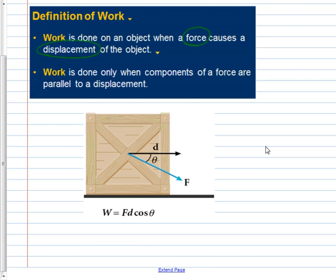So I am not doing work if I walk over to the wall and push on the wall as hard as I can. Even though I'm supplying a force, there's no displacement to that wall. I have done no work on that wall. So I have to have force and it causes a displacement of an object. In order to figure out how much work is done, we have to find the component of force that is in the same direction, or parallel, to the displacement.